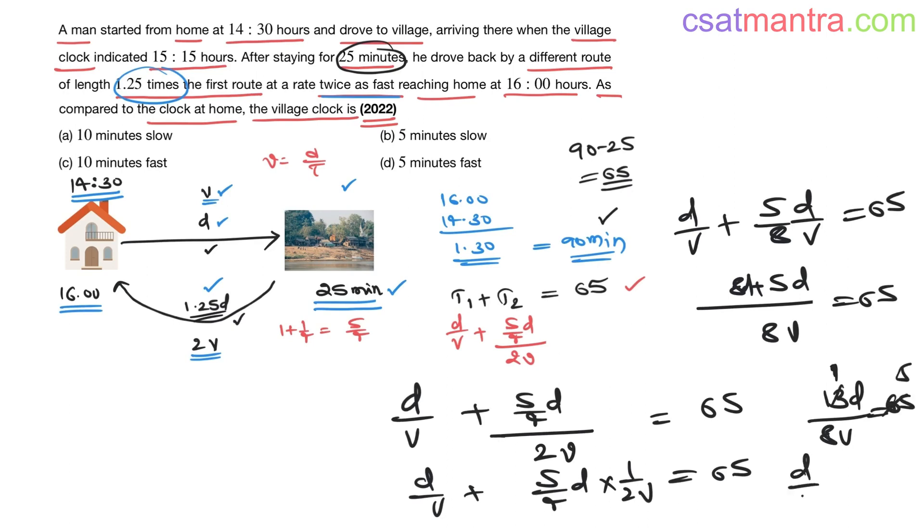13, 5s are, so D by V is equal to 40. D by V equals 40 minutes. D by V means time, 40 minutes.